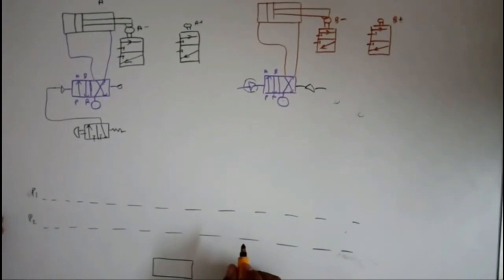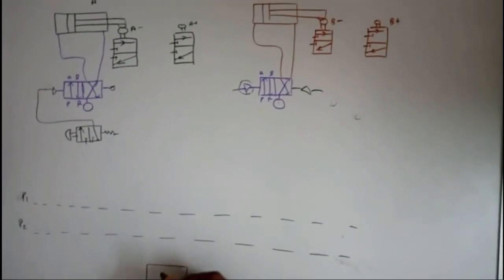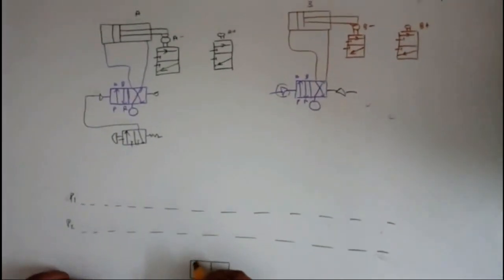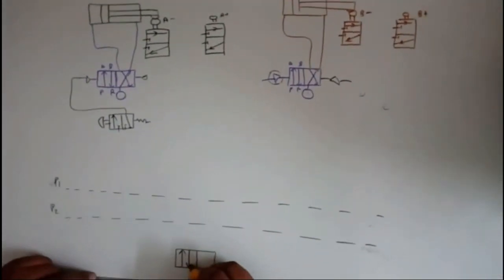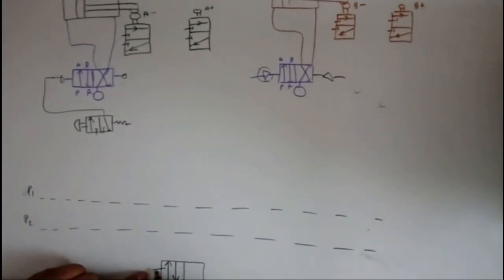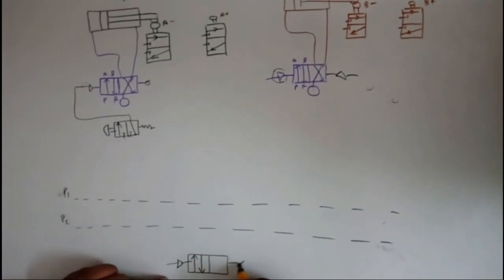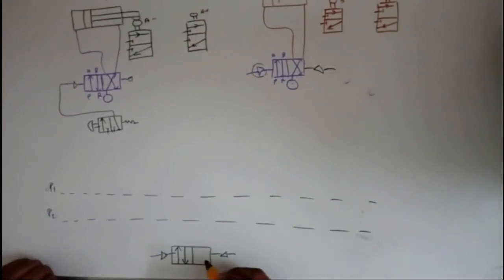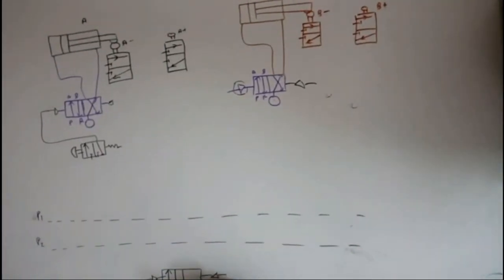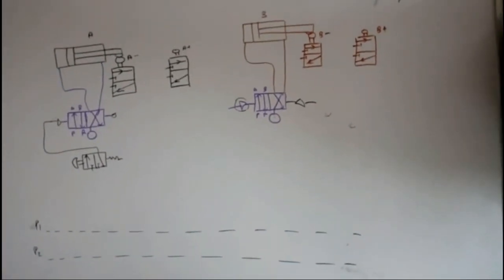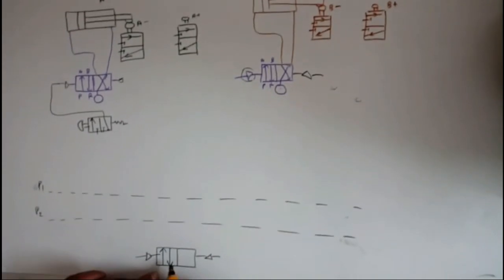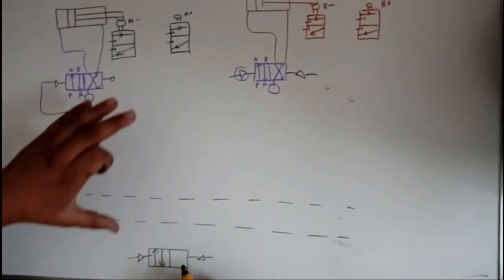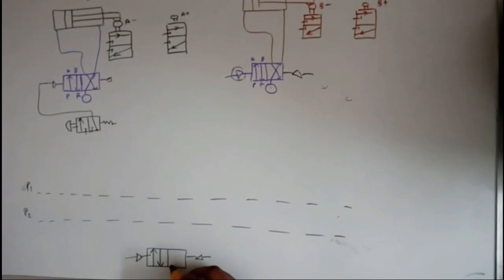Sometimes there is pressure in P1 and sometimes in P2, depending on the position of the 4/2 forward valve — also called the selector switch. This is the main valve controlling the movement of the cylinders. When the position changes, all cylinder movements change.